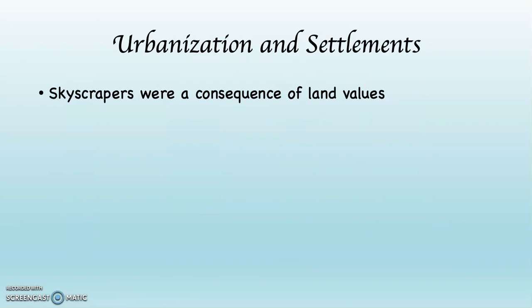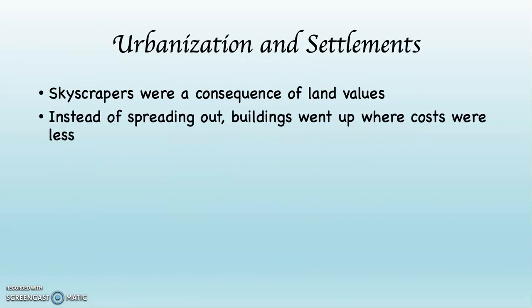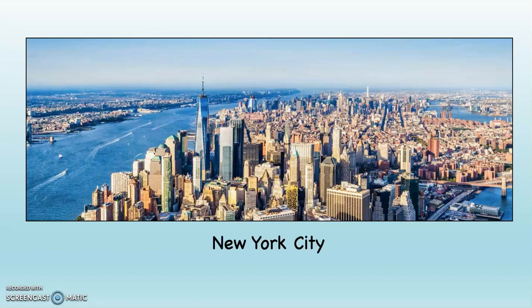Skyscrapers were actually a consequence of land values. Instead of spreading out where land would cost a lot of money, skyscrapers went up where the costs were less. What's cheaper — dirt or air? Go buy some air, then go buy the property across the street, which is going to cost more. So skyscrapers went up. New York City is probably the great example of this. Even though it has multiple CBDs, you can see it is a vertically developed city on Manhattan Island. Looking over at New Jersey across the Hudson River, property values are clearly less because you have flat land and the center of action — and therefore the center of property values — is in Manhattan. As you increase distance, property values go down.